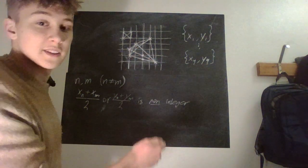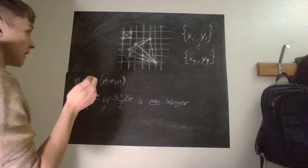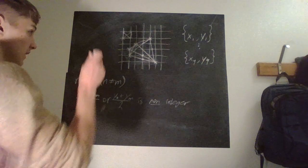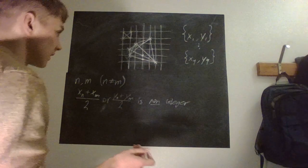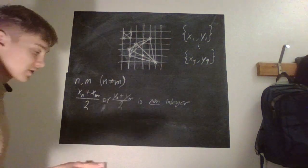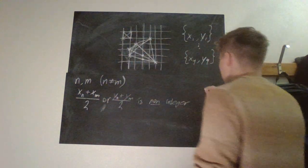So therefore, two of these four points cannot have the same evenness in both coordinates.